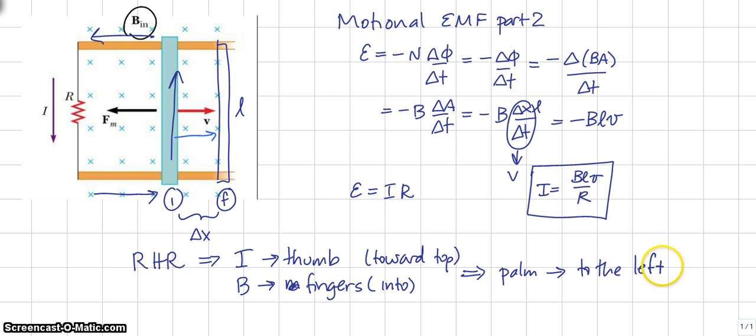What that means, at this current over here that has been induced, is now feeling a force to the left. So, as the bar is moving to the right, there is a force to the left. So, if there's a force to the left on the bar, and it's moving to the right, the bar will slow down.